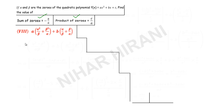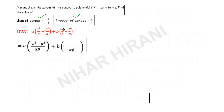Let us solve this very fast. I will start with LCM. Inside the bracket I will take the LCM, so the LCM will be alpha·beta, and I will write alpha·beta in the denominator. Beta is multiplied by alpha because the LCM is alpha·beta, so this will be alpha³ (alpha² times alpha). Similarly, this will be beta³. Now here the LCM is again alpha·beta — this alpha multiplied by alpha gives alpha², and this beta multiplied by beta gives beta².